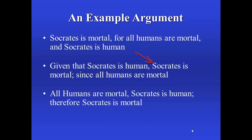Here's a third argument. All humans are mortal, Socrates is human, therefore Socrates is mortal. Here we have a conclusion indicator in 'therefore.' One interesting question to ask is: how many arguments are on the screen right now — three or one? I'll leave it up to you to decide. So here we have a number of examples of premise indicators: 'for,' 'given that,' 'since,' and a prototypical example of a conclusion indicator: 'therefore.' Here are some other premise and conclusion indicators. These lists are not exhaustive.